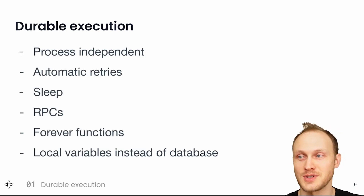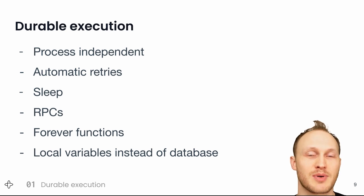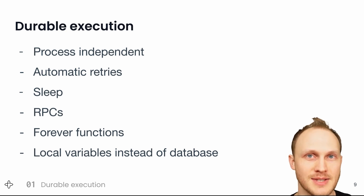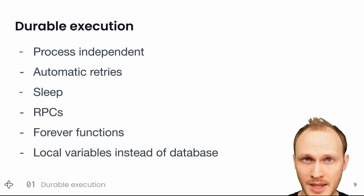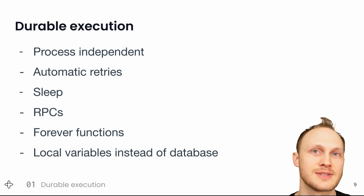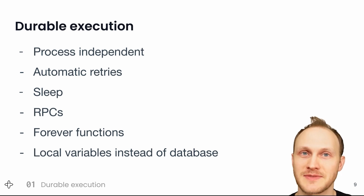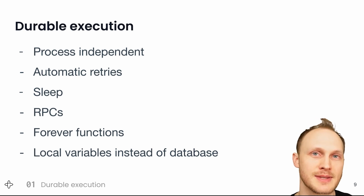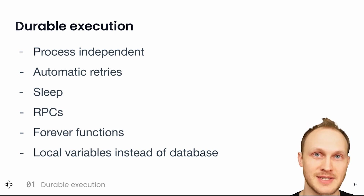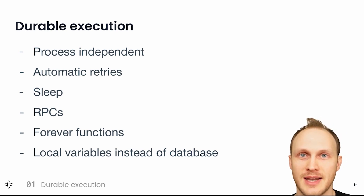And that is durable execution. It's running functions in a way that is process independent — they survive process death, and long running functions are intentionally run by different processes over time. It automatically retries any functions that might have transient failures. You can sleep for arbitrary periods of time. You can send messages to the function and receive responses. Your functions can last indefinitely long. And you can treat your local variables as durable state.